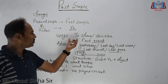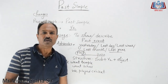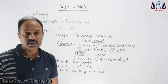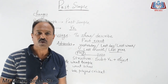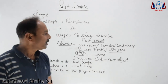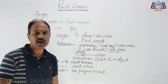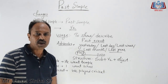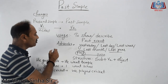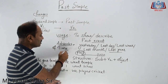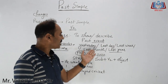Past simple ka use hai: to show or describe — warnan karne ke liye ya prdarshit karne ke liye — any past event. Jo bhi ghatna ho aap usko past simple se bol sakte hain. Agar aap padh rahe hain kuch aur uspe second form use kiya gaya hai, toh aapko pata lag jana chahiye ki yeh past simple hai. Indicators jin par dhyan dena hai — adverbs of time jaise: yesterday, last day, last week, last month, last year, last century — anything with 'last'.